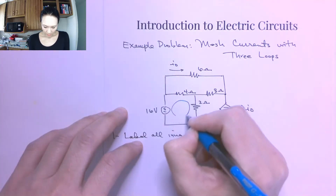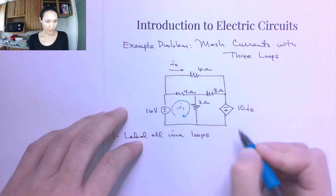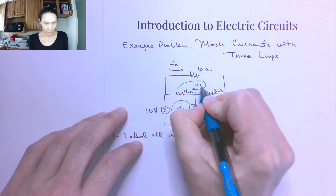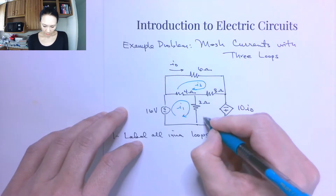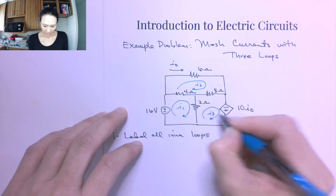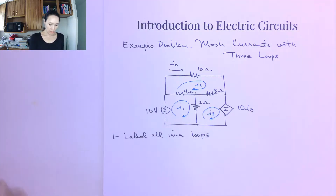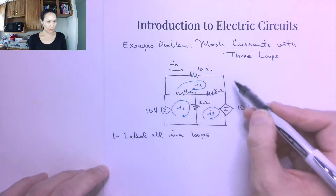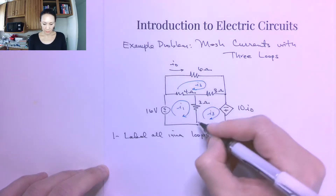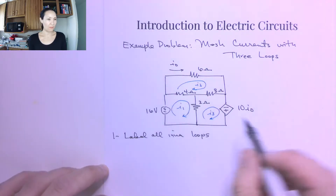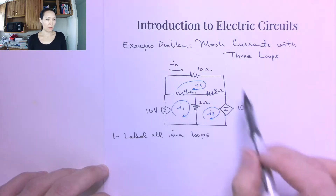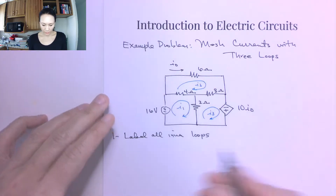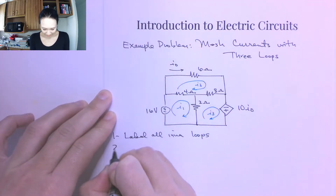I will call this one I1, this one I2, and this loop I3. You don't need any outer loops — you don't need any loops composed of two inner loops, because those just end up being redundant. Even though KVL tells us the sum of voltages around any loop equals zero, we only need the inner ones for the mesh current method.